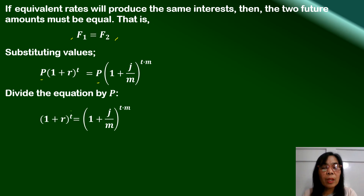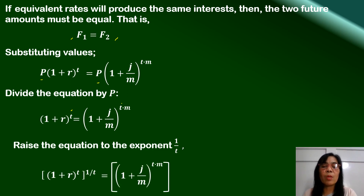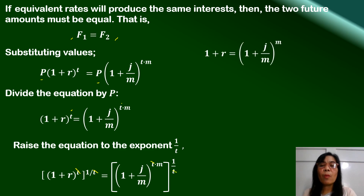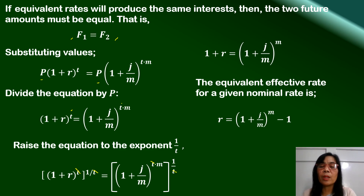Since both sides contain the exponent T, we raise both members to the exponent 1 over T. Applying the power-of-a-power rule, the exponents multiply and T cancels out, giving us 1 plus R equal to (1 plus J over M) raised to M. Therefore, the formula for the equivalent effective rate of a given nominal rate is: R equals (1 plus J over M) raised to M, minus 1.